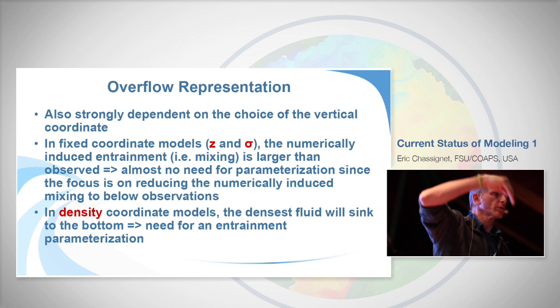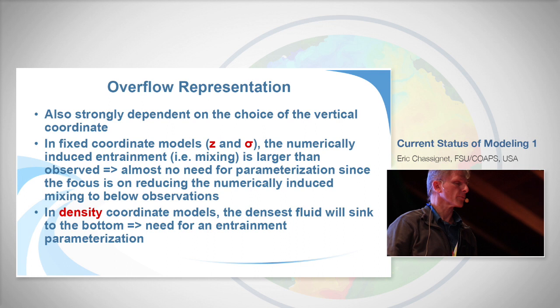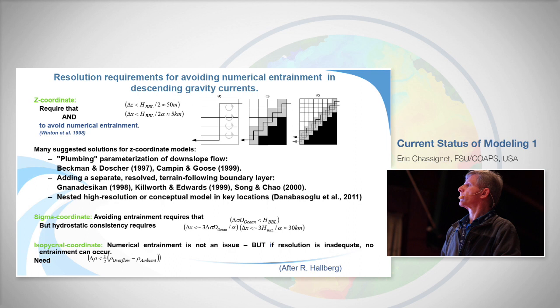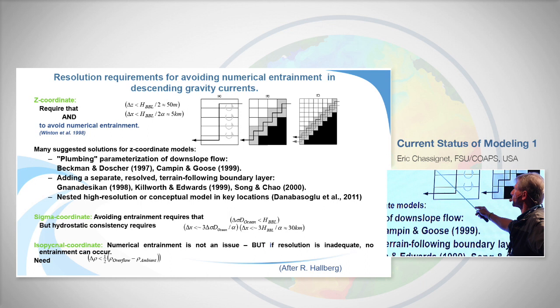A slide from Bob Hallberg at GFDL shows that you need Δz of 50 m and Δx less than 5 km to avoid numerical entrainment — that's the guideline for Z-level models. We are barely getting there for global models. There are many parameterizations that have been proposed. In density/isopycnal coordinates it's the opposite: if a dense fluid falls down a slope, it doesn't mix at all, so you need to parameterize the entrainment that takes place. In Z or sigma models you try to reduce numerically-induced mixing; in isopycnal models you need to add mixing.